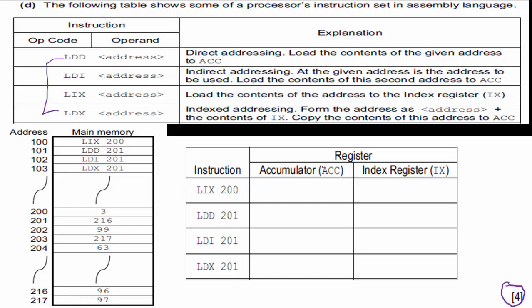We have two registers: the accumulator and the index register. We're looking at LIX 200 first. LIX says: load the contents of the given address to the index register. So we take the contents of address 200, which is three, and load that into the index register. That's one point done.